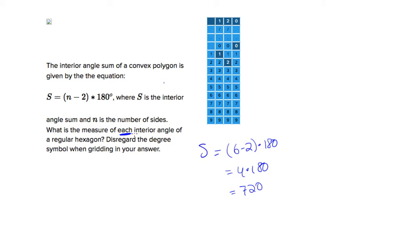We want the measure of each interior angle of a regular hexagon. Regular means all angles are equal, and since we want each one, and we know they all have to be the same, there are 6 total angles. Divide the 720 by 6, and you get 120 degrees for each of those angles in a regular hexagon.